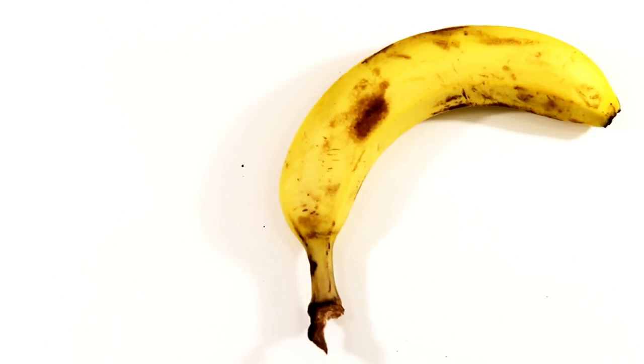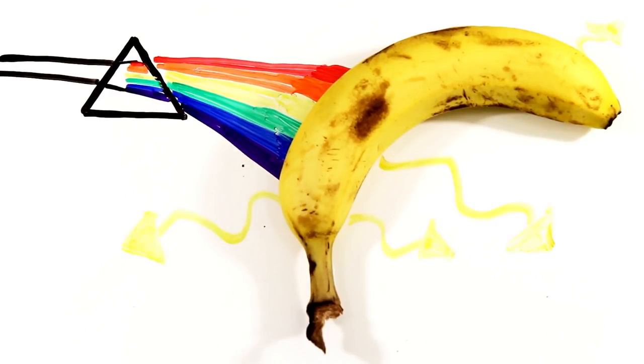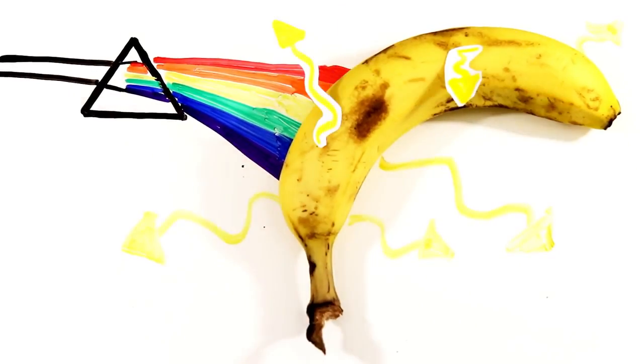For example, when you hold a yellow object in real life, it's actually absorbing every wavelength except yellow. That yellow light bounces back and hits your eyes.